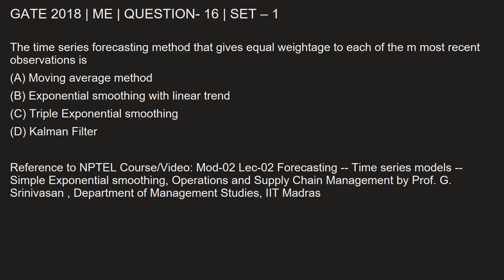This question is from GATE 2018 Mechanical Engineering paper set 1, question number 16. The time series forecasting method that gives equal weightage to each of the M most recent observations is dash.